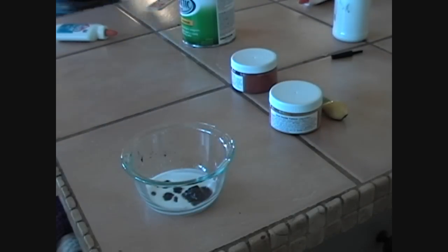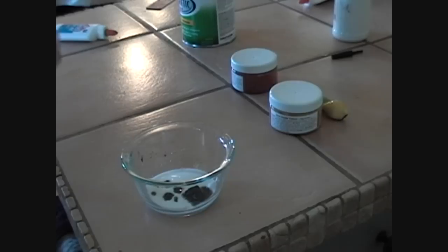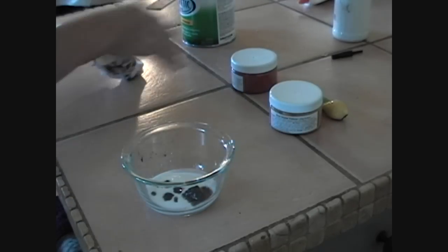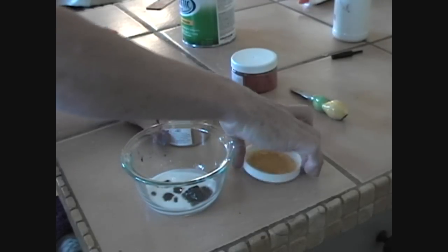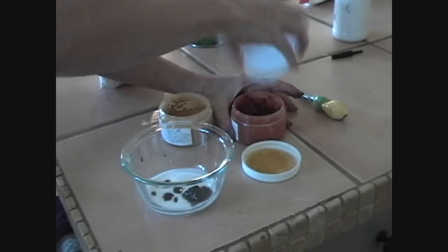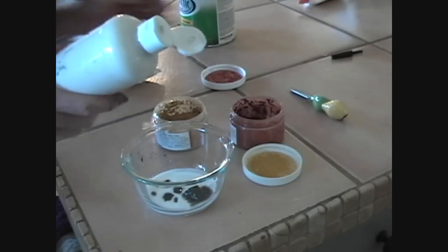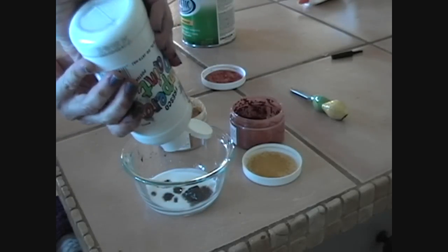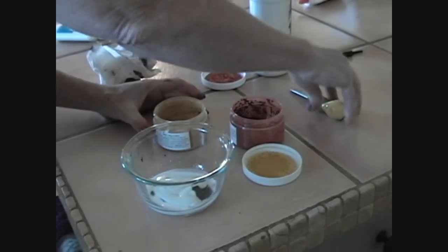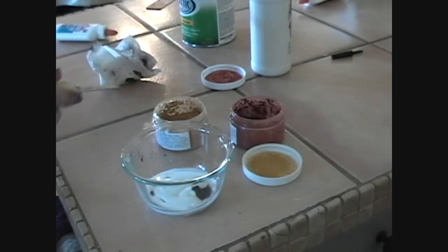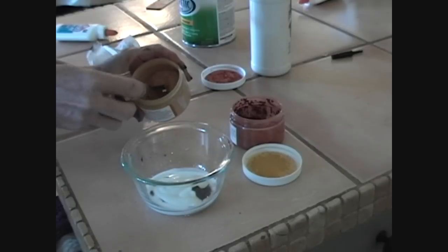Now I've got powdered yellow and powdered red paint, and white tempera paint. I'm putting some white tempera paint in because I want it to lighten up the dark.